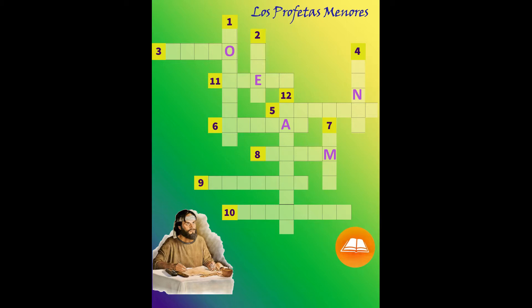Les leeré una pista como ejemplo para que completen las casillas con el nombre del profeta. Número cuatro: profeta que por orden de Dios debía ir a predicar a la ciudad de Nínive y que al no obedecer fue tragado por un pez gigante. ¡Jonás! ¡Muy bien!